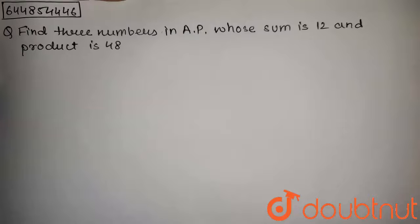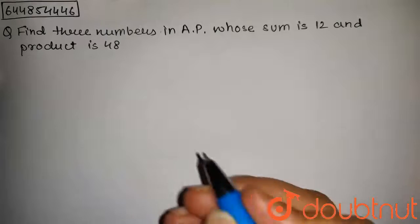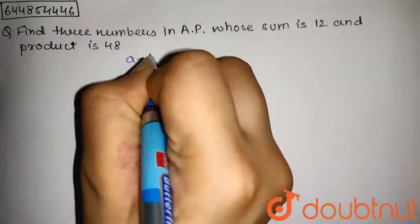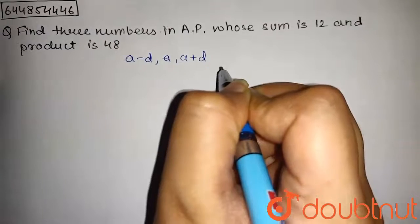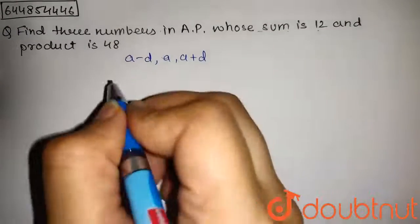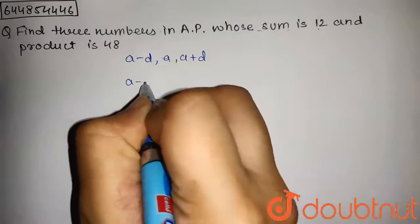So let the three numbers which are in AP be a minus d, a, and a plus d. Now we have given that their sum is 12, so a minus d plus a plus a plus d equals 12.